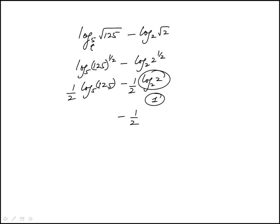125, you have to recognize, is 5 cubed, so log base 5 of 125 equals log base 5 of 5 cubed. This would be 3 times log base 5 of 5, and that's 1, so this is just 3.